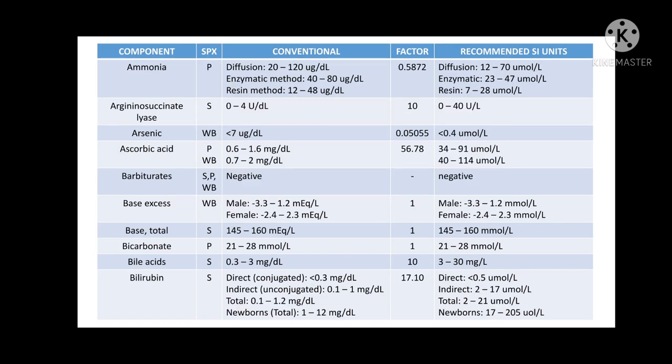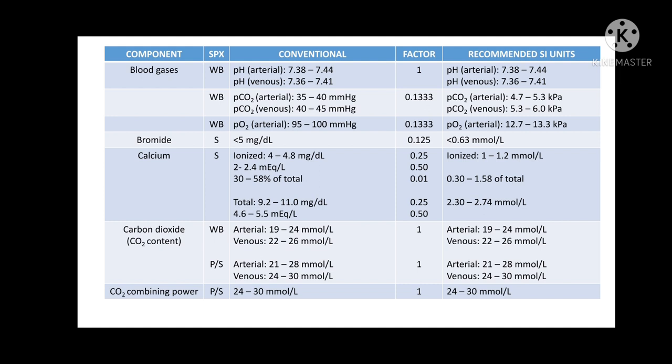If albumin is tested using electrophoresis, the result is 3.2 to 5.6 g/dL; using eye-binding, the result is 3.8 to 5.5 g/dL. All three methods still use 10 as the conversion factor. For barbiturates, the specimens used are serum, plasma, or whole blood, and the result as an unacceptable reference range is negative for both conventional and SI units. For blood gases using whole blood, pH, pCO₂, and pO₂ each have both arterial and venous acceptable reference range results.